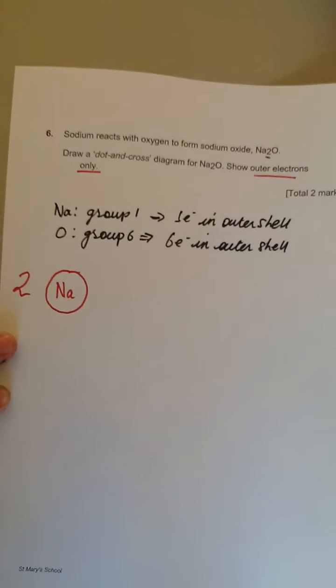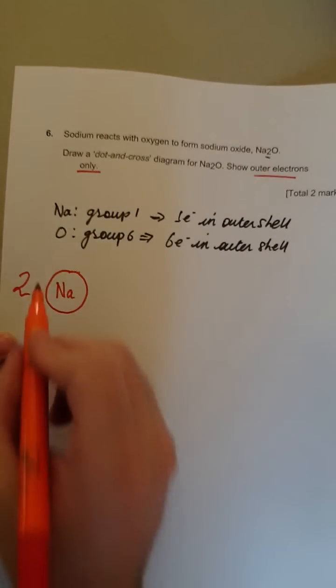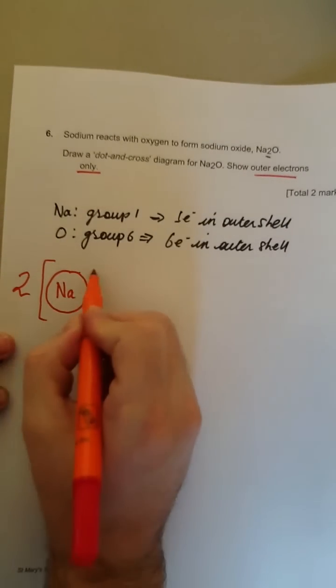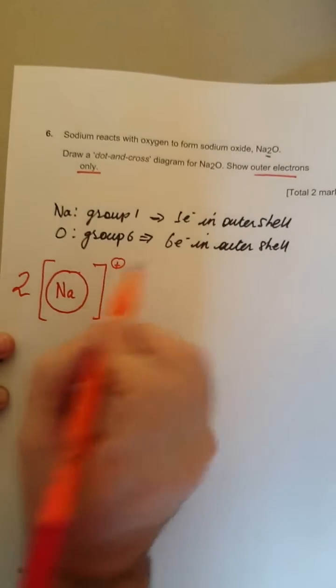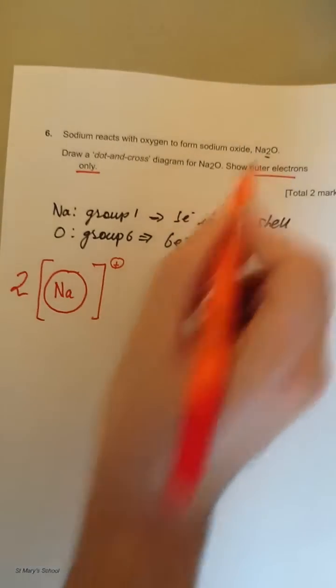How many charges does sodium have? It's lost one electron, so we put square brackets and we put a plus. There are two sodium atoms.